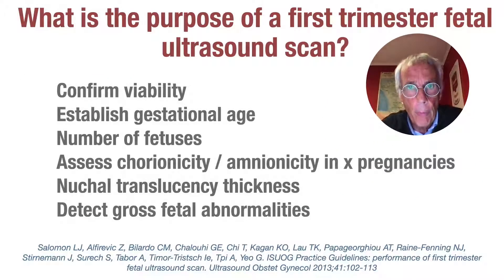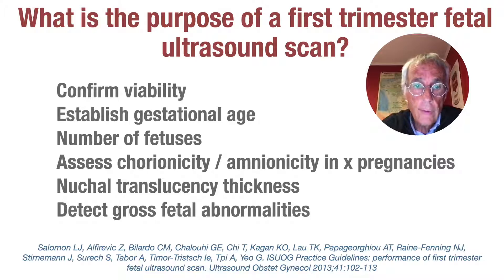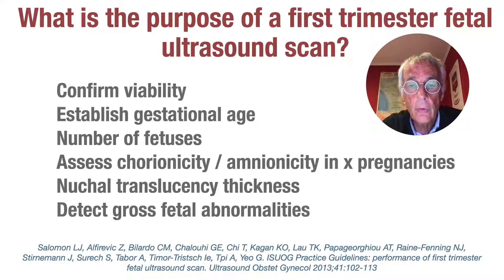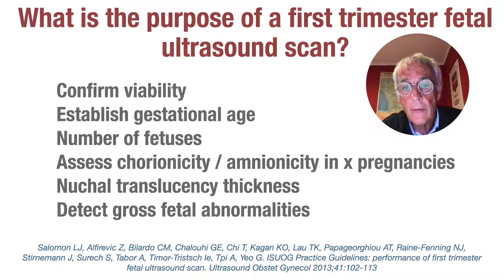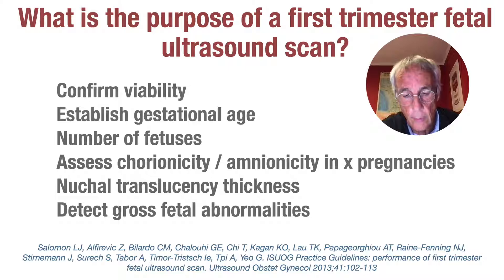What is the purpose of the first trimester fetal ultrasound scan? It is to confirm viability, to establish the gestational age, to count the number of fetuses, assess chorionicity, amnionicity and multi-pregnancy, perform the nuchal translucency measurement — which is used for screening of chromosomal defects and especially Down syndrome — and also to detect all major fetal abnormalities. This is a point where 3D is a real benefit, because you can demonstrate all these malformations.